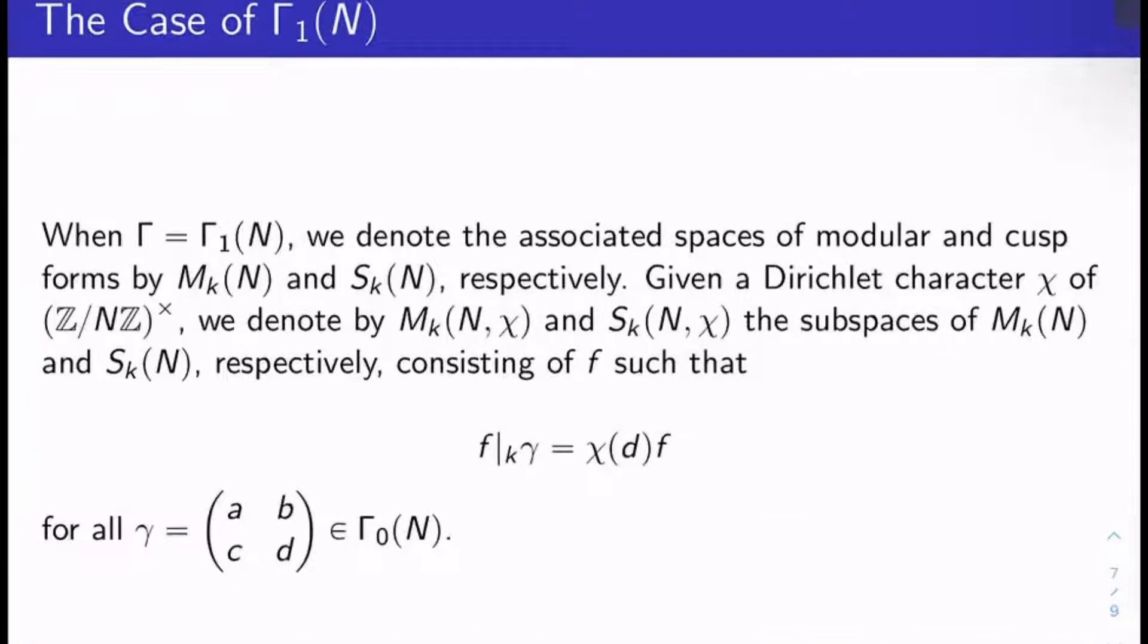Okay, the special case where we're looking at the congruence subgroup Γ_1(N), which is the set of all matrices in SL_2(Z) that reduce to a unipotent matrix mod big N is of primary concern. Okay, so let's let Γ just be Γ_1(N). We'll denote the associated spaces of modular and cusp forms for this specific congruence subgroup just by M_k(N), S_k(N) respectively.